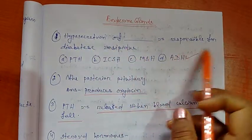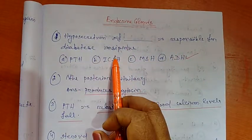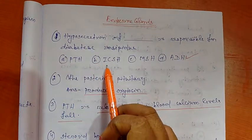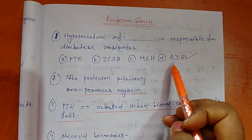Hyposecretion of DAS is responsible for diabetes insipidus. Options are PTH that is parathyroid hormone, ICSH, MSH, and ADH.